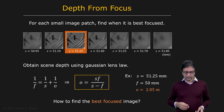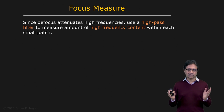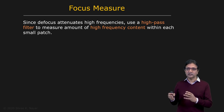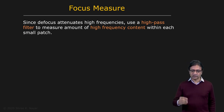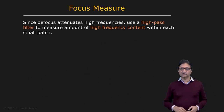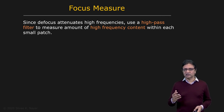The key problem is: how do we find the best focused image? Since defocus attenuates the high frequencies severely — defocus is a low-pass filter — we want to use processing of the high frequencies to estimate the amount of defocus for each patch. We want to measure the amount of high-frequency content within each patch, which corresponds to measuring intensity changes using the derivatives of the image.